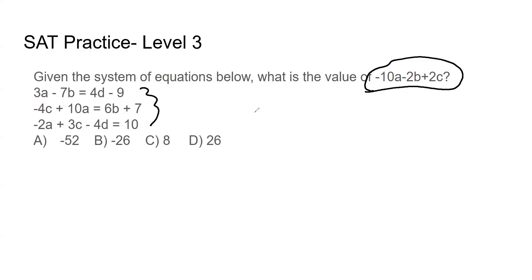So the first one I'm going to rewrite is 3A minus 7B. Now I see some C's in the other ones. I'm going to put a placeholder plus 0C just to kind of get everything looking the same. Now I'm going to subtract 4D from both sides. So I'm going to have minus 4D equals negative 9.